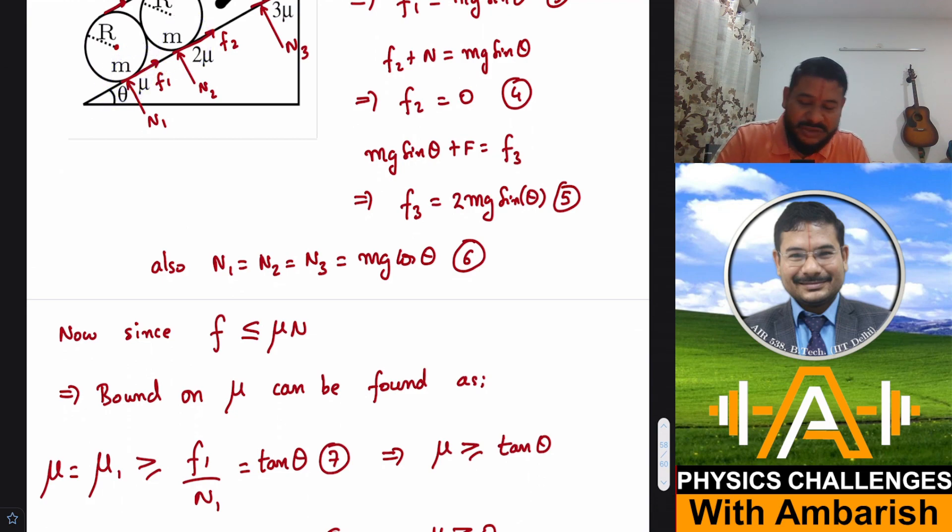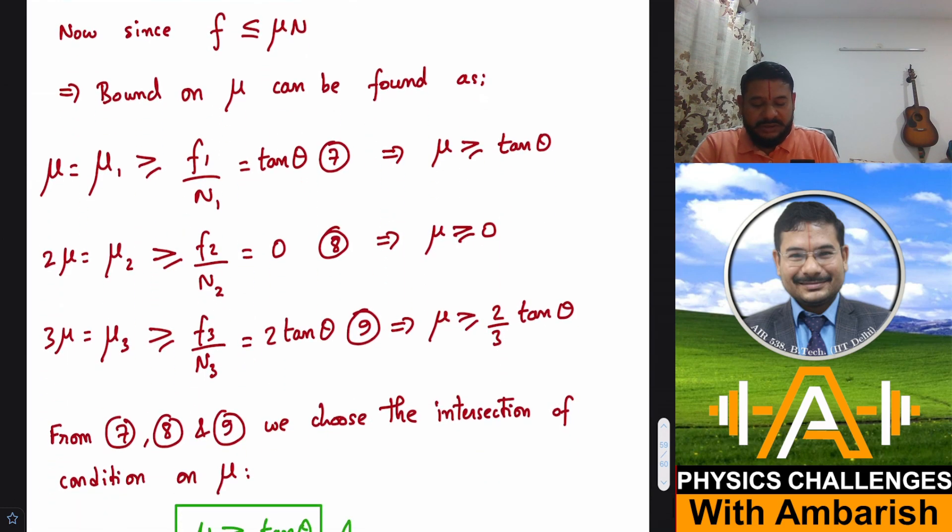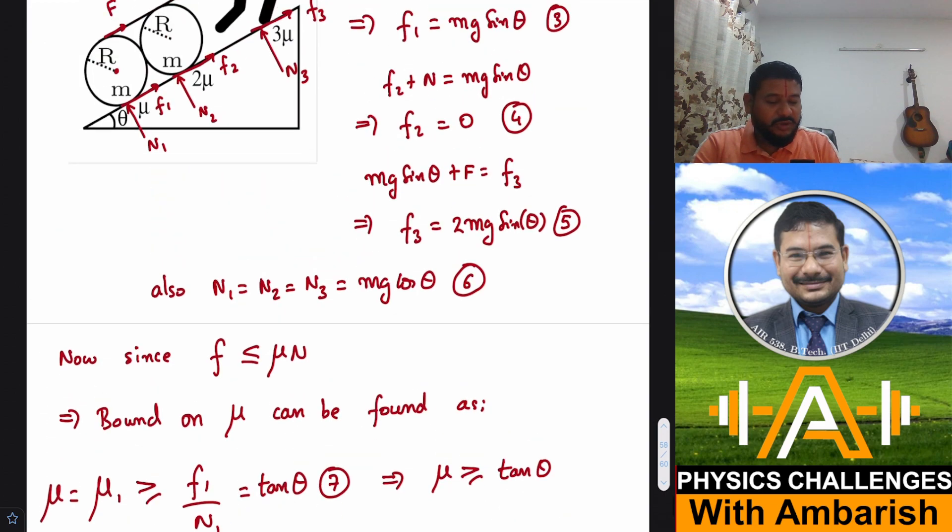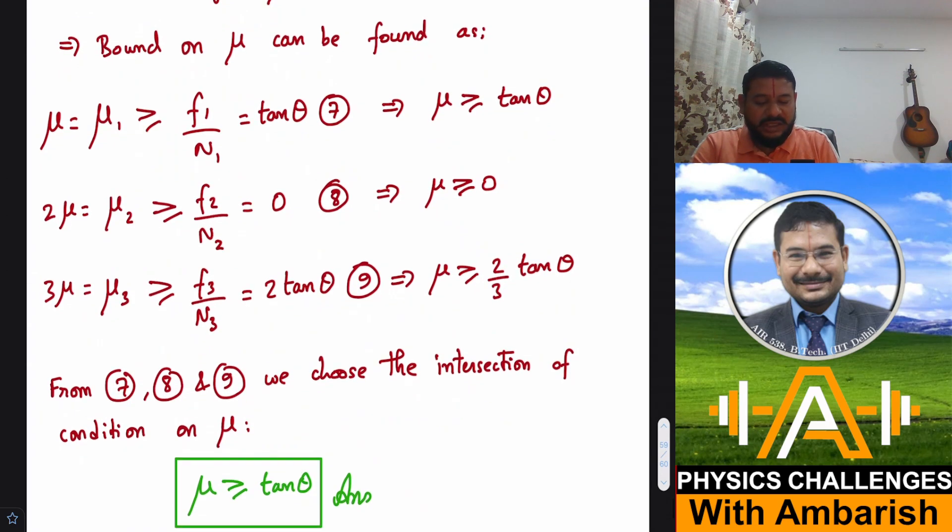What about this place? No requirement of friction, so we don't worry about this. For the man, μ should be greater than F3 upon N3. μ3 should be greater than F3 by N3. F3 is 2mg sin θ and N3 is mg cos θ, so this μ should be greater than 2 tan θ. But this μ is also 3μ, so this gives us μ should be greater than 2/3 tan θ.